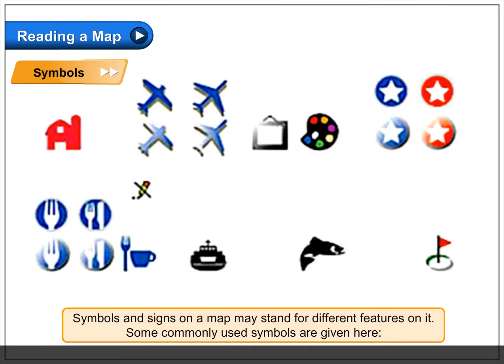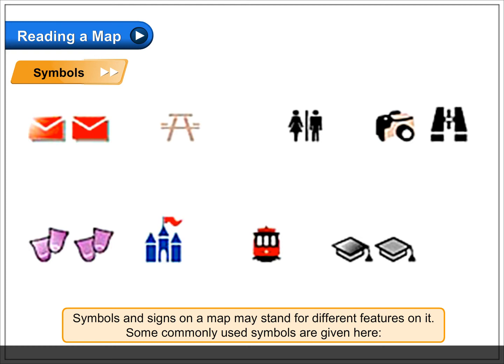Symbols and signs on a map may stand for different features on it. Some commonly used symbols are given here.